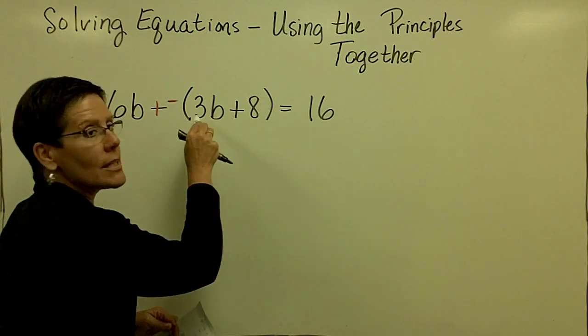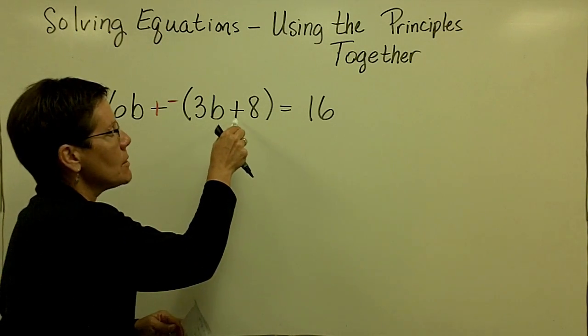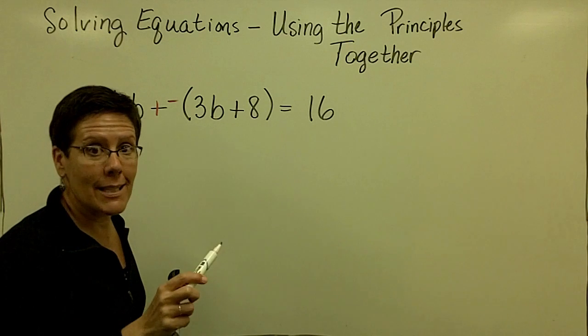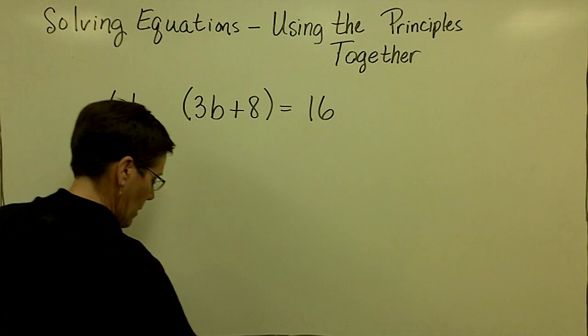Add the opposite of both of those. So the opposite of 3B is a negative 3B and the opposite of a positive 8 is a minus 8. That's one way to think about it. Let's put that minus sign back in there.